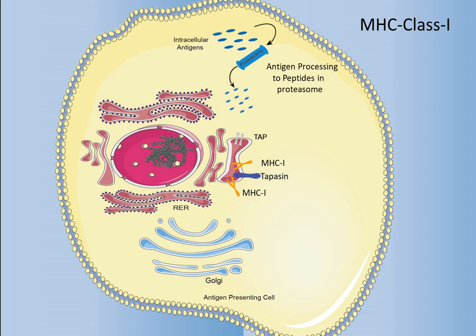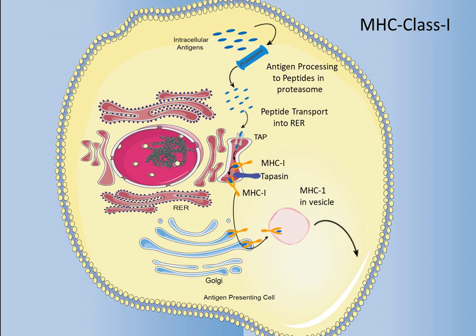The MHC-class I molecular pathway is an endogenous antigen-presenting pathway. Endogenous antigens are degraded by the proteasome after ubiquitination, then bind to the transporter associated with antigen processing, TAP. TAP selectively transports 8 to 12 amino acid antigen-peptides to the endoplasmic reticulum, ER. The antigen-polypeptide binds to the antigen-binding peptide groove of the MHC-class I molecule assembled by the ER to form an antigen-peptide MHC-I molecular complex. The complex is then transported to the cell membrane via the Golgi apparatus for recognition by CD8+ T-cells, thereby completing the antigen-presentation process.